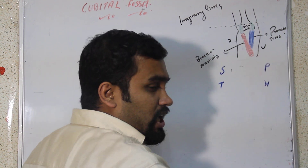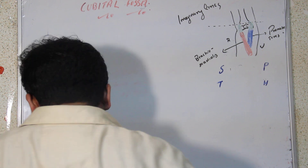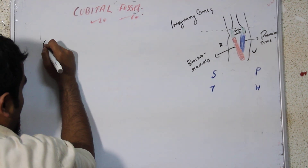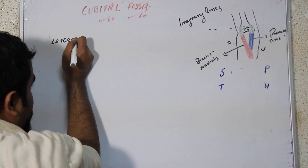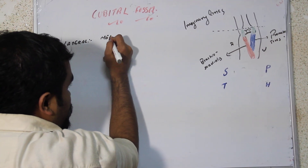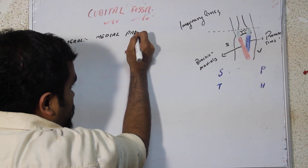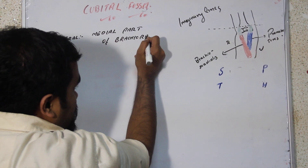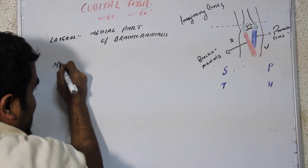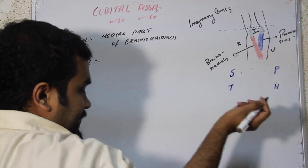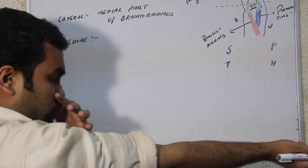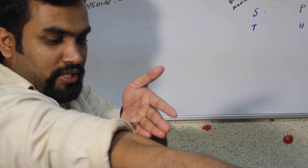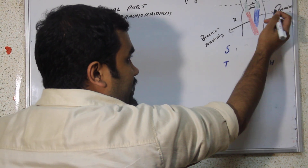We need to know the correct boundaries of the cubital fossa. The lateral border is formed by the brachioradialis. The medial border is by the pronator teres — since the medial border means the border closer to the body, it is the lateral part of the pronator teres that participates here.